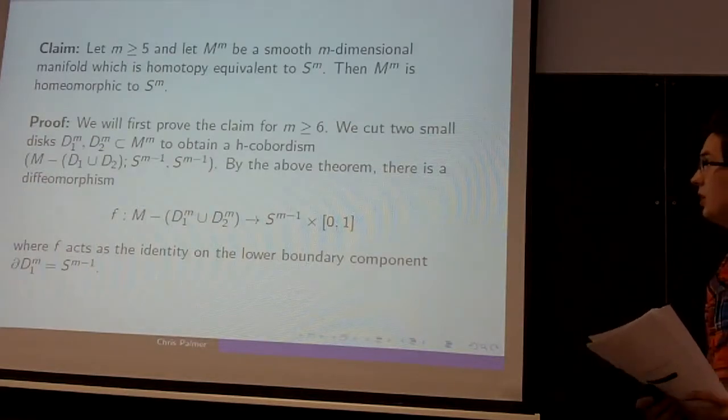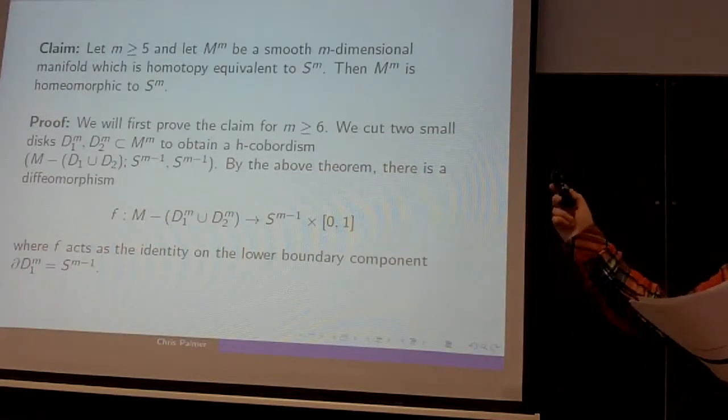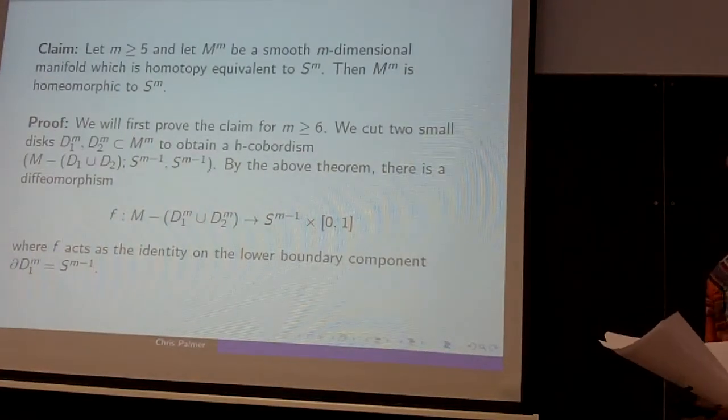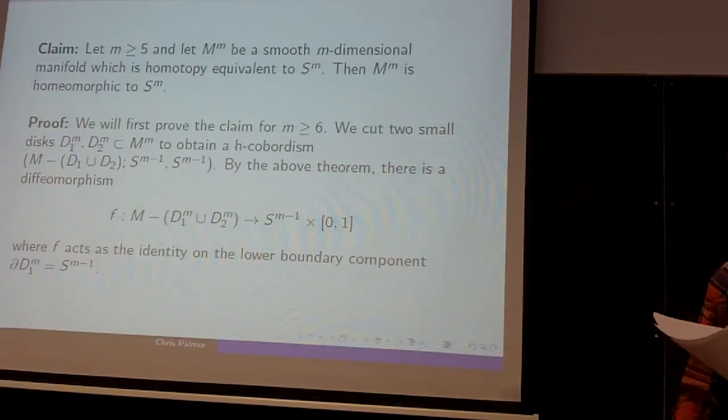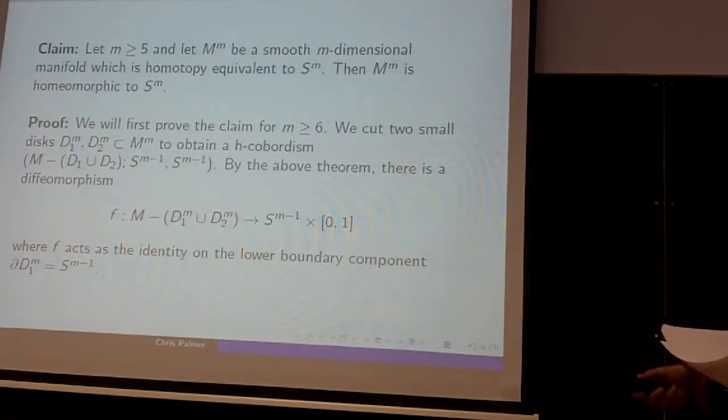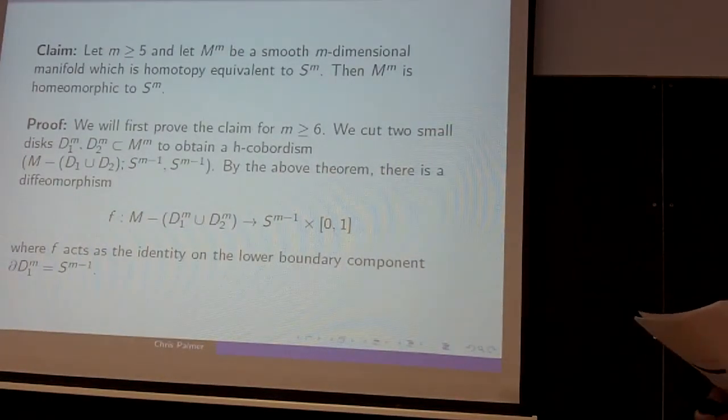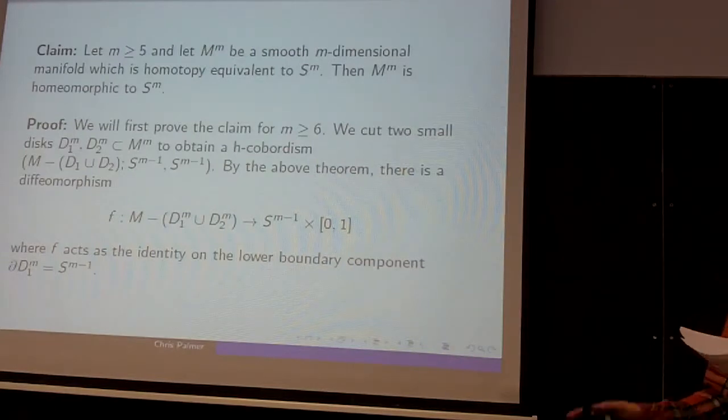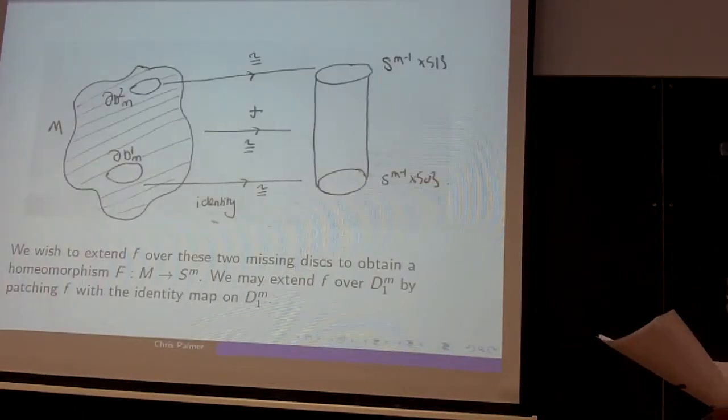The proof is divided into two cases. The first case for m greater or equal to 6. We use a similar trick to before. We remove two small N-discs, and this gives us a H-cobordism between the complement of these two N-discs and the new boundary components, which are two (m-1)-spheres. The H-cobordism theorem gives a diffeomorphism between the complement and this product of the (m-1)-sphere and the closed interval [0, 1]. And when we restrict F to the lower boundary component, the boundary of the first disc, it acts as the identity.